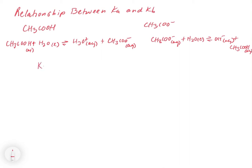So if you write out the Ka for this, Ka is going to equal the concentration of H3O plus times the concentration of acetate divided by the concentration of acetic acid.